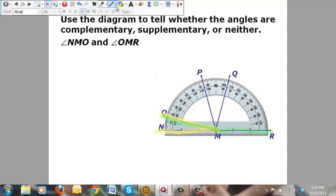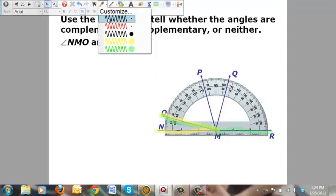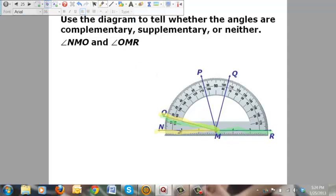Well, several ways you can look at these. One way is to say, hey, these two together form 180 degrees because you're going from 0 to 180 degrees. So, right there it should tell you it is going to be a supplementary angle.